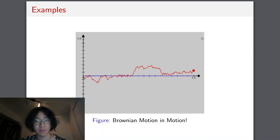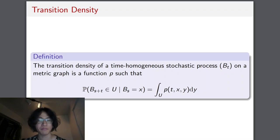So here are some examples, some sample paths of Brownian motion. And the transition density of a stochastic process, we can basically think of as the probability that after some time t, the Brownian motion, or the stochastic process, jumps from value x to value y.